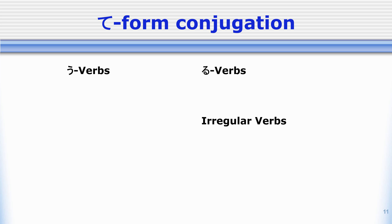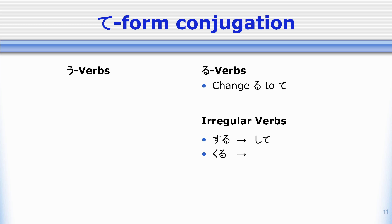For ru-verbs, they are very simple. All we have to do is get rid of the ru and change it to te. So for example, taberu — all we have to do is cross out the ru and change it to te: tabete. Neru changes to nete, and miru would change to mite. For irregular verbs, these are the ones we just have to remember: suru will change to shite, and kuru will change to kite.